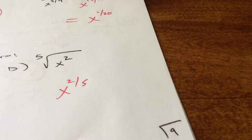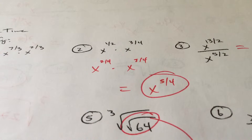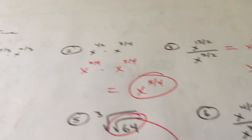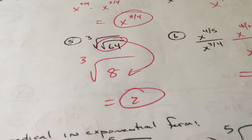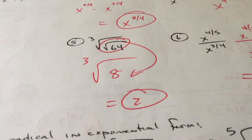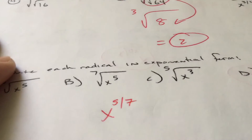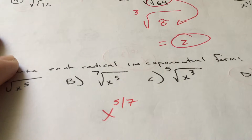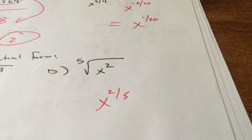Just some game time questions, page 9. Add the exponents — get the same denominator. Subtract the exponents. Inception style: square root of 64 is 8, then the cube root of 8 is 2. Subtract the exponents. That would be x to the 5 sevenths. x to the 2 fifths.